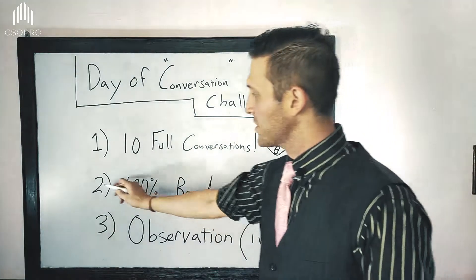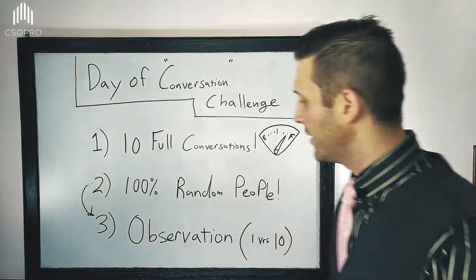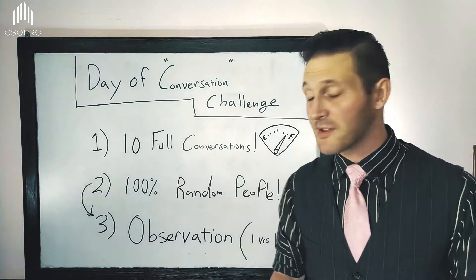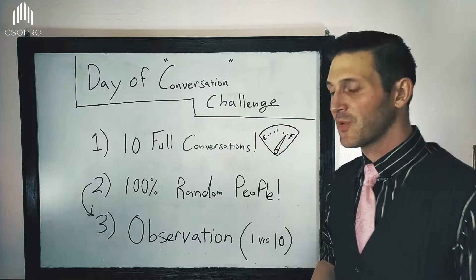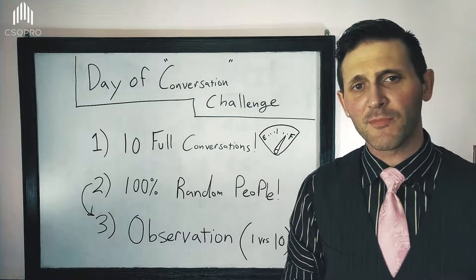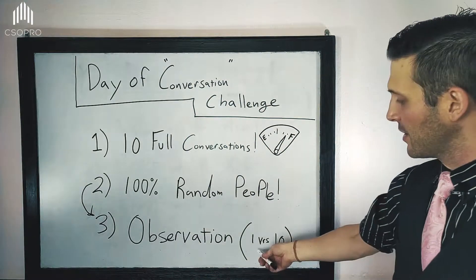These people need to be 100% random, completely people you've never met before. The most important thing about this day is that at the end of the day, you need to take every conversation and revert back to number three: you need to have observation. You need to reflect on what took place and recognize the difference between your tone of voice, the word choice you used, the progress you made in each conversation, the difference between conversation one versus conversation number 10.